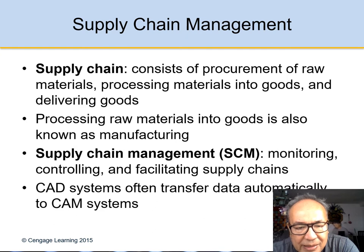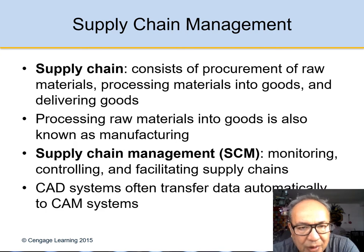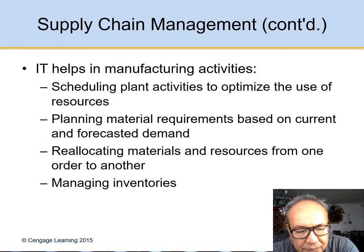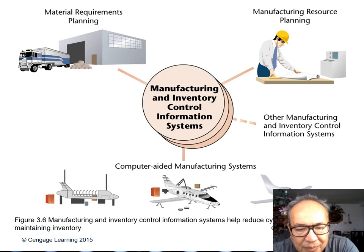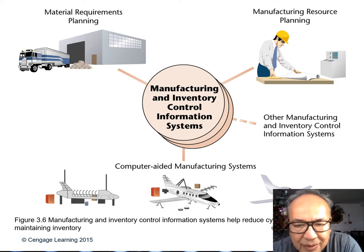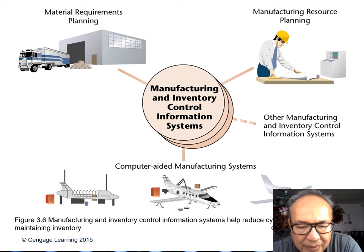The supply chain consists of procurement of raw materials, processing materials into goods, and delivering the goods. For example, paper comes from a tree — you cut the tree, bring it from the forest to the manufacturing facility, and make paper or wood. For manufacturing and inventory control, we have material requirements planning — what raw materials do you need — and manufacturing resource planning. You can also use computer-aided manufacturing systems.